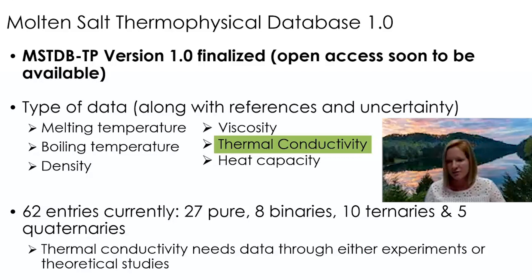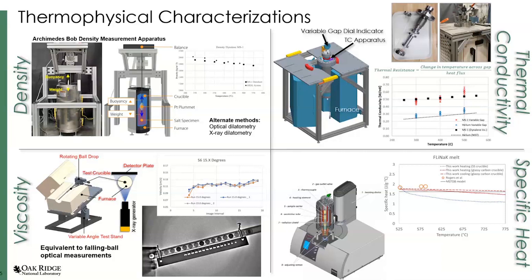This database is also a good tool to evaluate which properties require further investigation. For example, thermal conductivity has very little data from either experiments or theoretical studies. This directly impacts the experimental work scope at Oak Ridge for FY22, where we will be focusing on viscosity and thermal conductivity. Here you can see four of Oak Ridge's benchmark thermophysical experiments. These benchmark experiments are used to generate the data, and these systems generate binary data, justifying the need for modeling and simulation of more complex systems like ternaries and quaternaries.